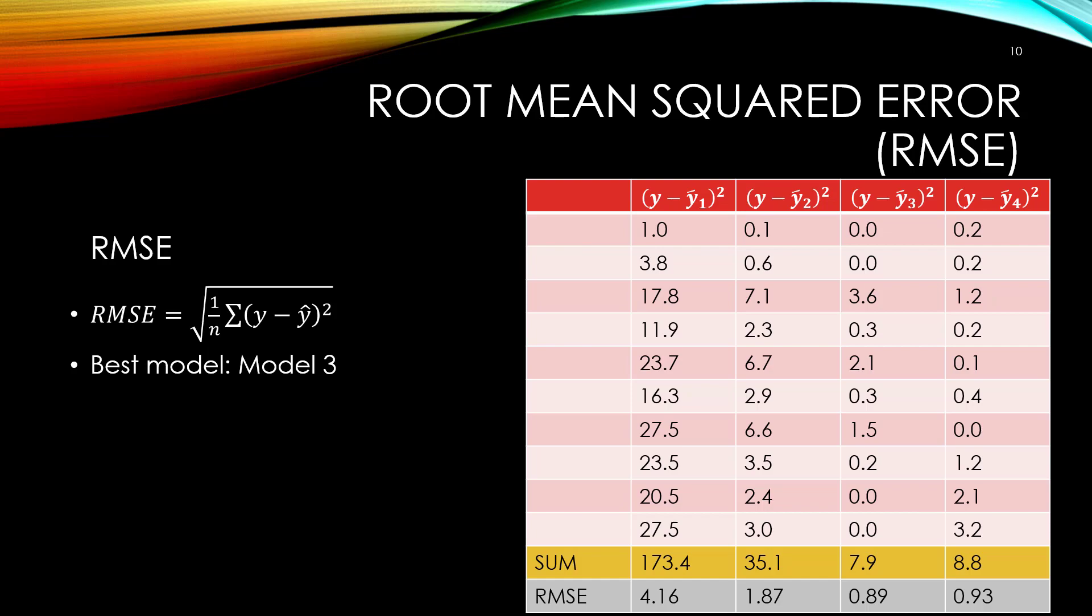Between MAE and RMSE, if you have reason to believe that errors are orders of magnitude worse moving away from the truth, then use RMSE. For example, if you have an error of 2 and 3, and an error of 3 is almost as bad as an error of 2, then use MAE. But if you have an error of 2 and 3, and an error of 3 is some order of magnitude worse than 2, let's say over 2 times worse, then use RMSE.